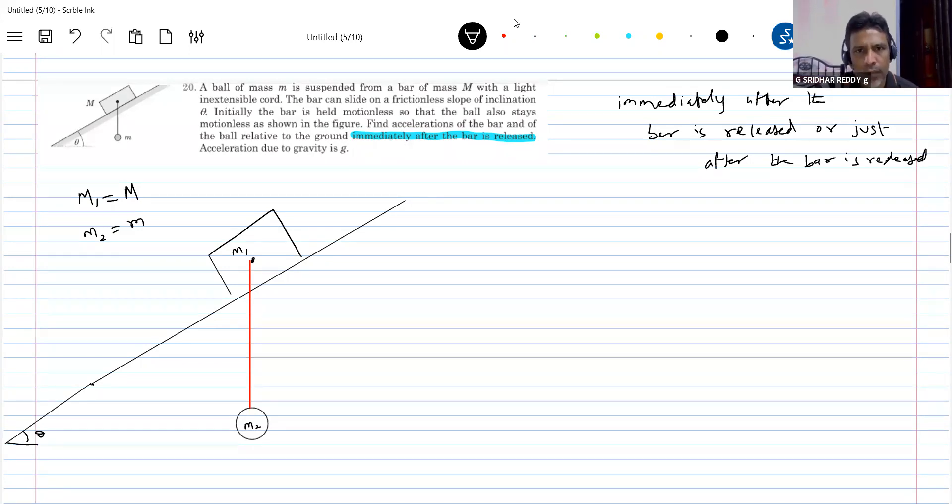This is M2. Okay, now come for this. So he's asking some conditions like this. The moment I release, he's asking what is the - find the acceleration of the bar and the ball relative to the ground.